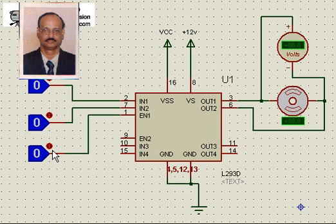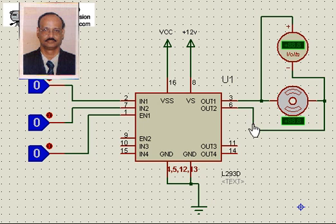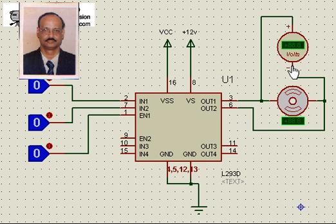For example, now if both inputs are zero here, that means both outputs will be high here. With high and high, the motor will not rotate. You can see this while we do the simulation — it will be showing zero voltage across this.